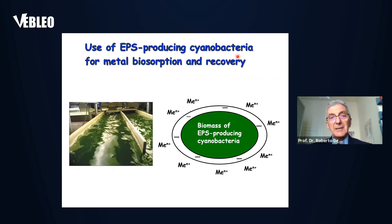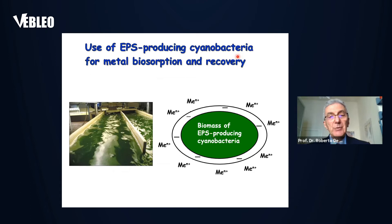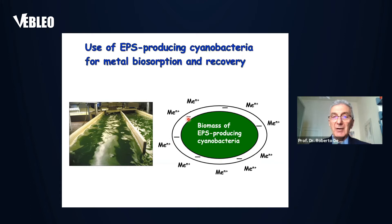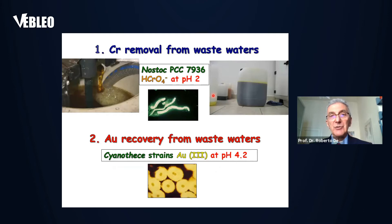We also started the possibility to use EPS-producing cyanobacteria for developing processes for removing heavy metals from wastewaters. The idea was based on the fact that most EPS produced by cyanobacteria are characterized by the presence of uronic acids, meaning they have a negative charge capable of interacting with metal cations. Due to the presence of capsules and the release of polysaccharides into the culture medium, we did several studies, and I will show you shortly some of the results obtained in two different studies made with industrial wastewater.